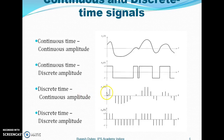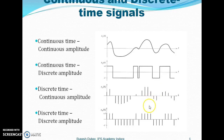Discrete time, continuous amplitude: these are discrete time signals, meaning the signal is available only at fixed time durations. The amplitude is continuous, meaning it can take on any value between the two fixed intervals. Then there are discrete time, discrete amplitude signals, where both the amplitude values and the time instants are fixed and defined.